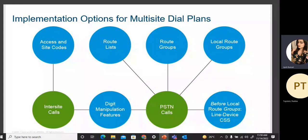Implementation options for the multi-site dial plan: for inter-site calls, access codes and site codes are used along with the digit manipulation feature. For PSTN calling, digit manipulation is also used. Route lists, route groups, and local route groups are configured.